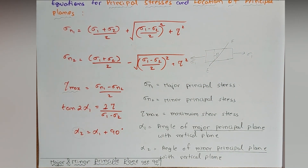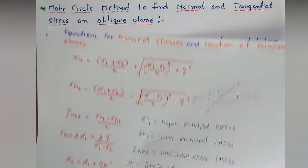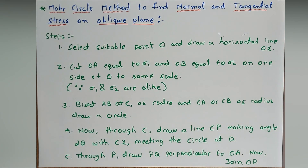So σn1, σn2, τmax, α1, and α2 — all these things are important. This is all about the third part of the topic principal stresses and principal planes. In the next lecture we will start with Mohr's circle method to find normal and tangential stresses on an oblique plane. Thank you for watching.